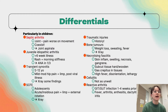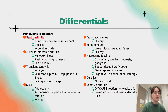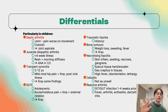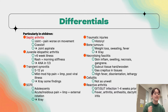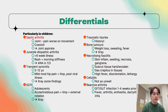Some differentials to consider: in children particularly, these include septic arthritis, juvenile idiopathic arthritis, transient synovitis, and slipped capital femoral epiphysis. We should also consider traumatic injuries, and we always want to rule out bone tumors. Other infections to consider include necrotizing fasciitis, cellulitis, and reactive arthritis.